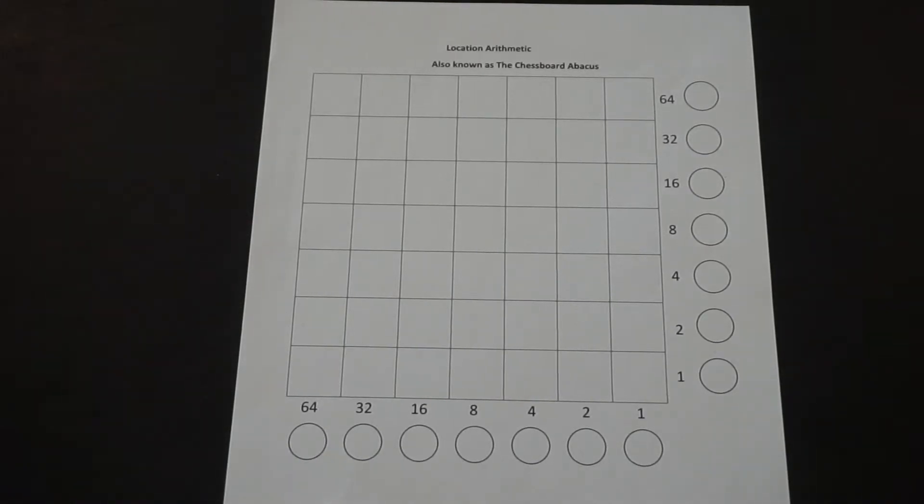This video is an introduction to a calculating device known as the chessboard abacus or location arithmetic. It was developed by John Napier and it kind of looks like a game board. Napier himself actually said that calculating with this is more a lark than a labor, and that is because it feels very much like a game.